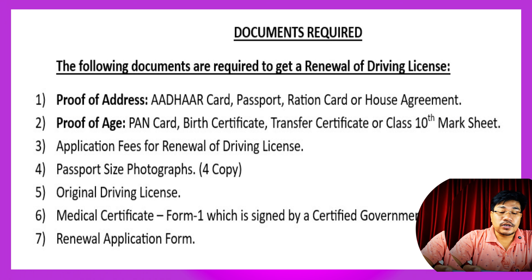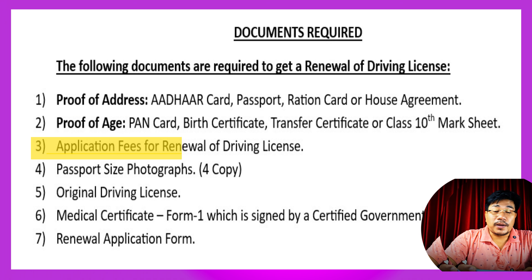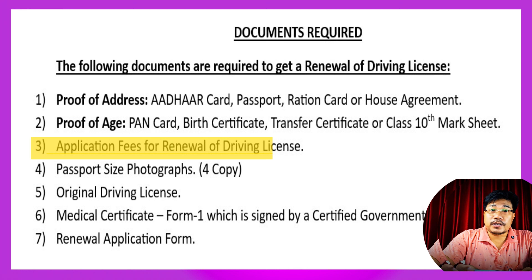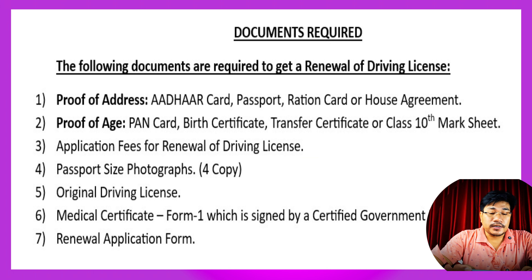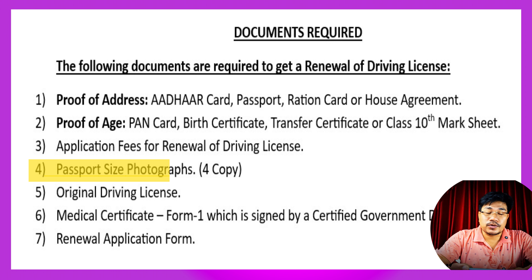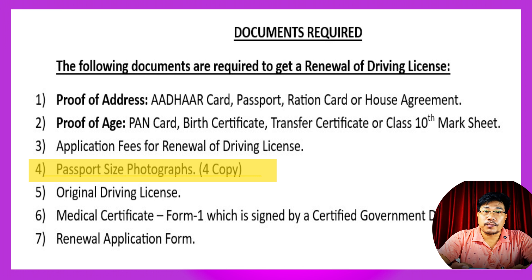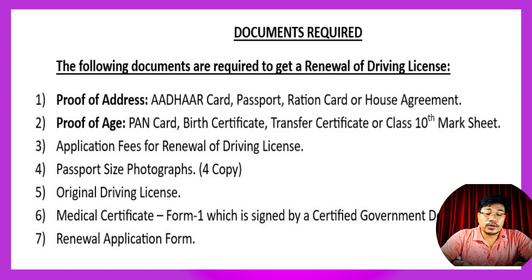Next is a driving license. Proof of address is required — for example, Aadhaar card, passport, ration card, and house agreement.